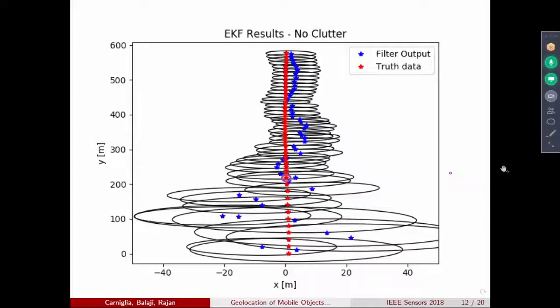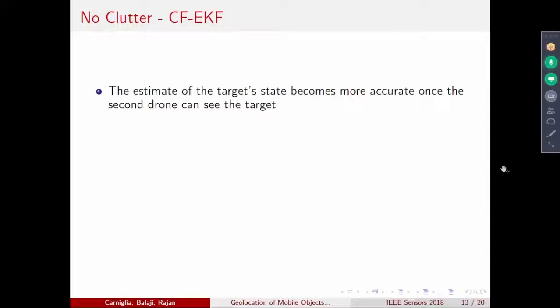As time progresses, the car is moving. For the first 10 of these red dots, only one drone is seeing the target because the other drone is behind the building. Once that drone comes out from behind the building, it's able to see the target, and then we start fusing the information. Once you start fusing the information, you see that the probability region in which you think 95% of the time the target is present reduces. Also, the RMS value—this is the true value, and the blue ones are the estimated value—the difference between them also reduces.